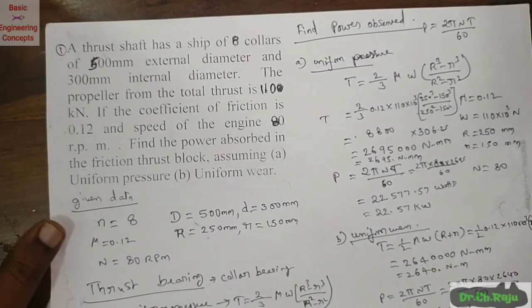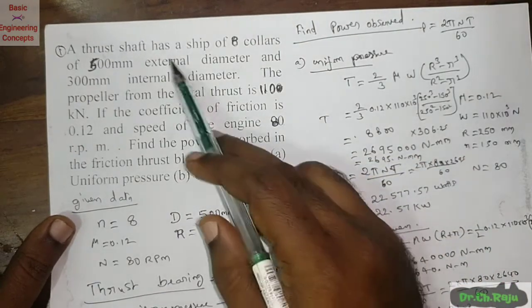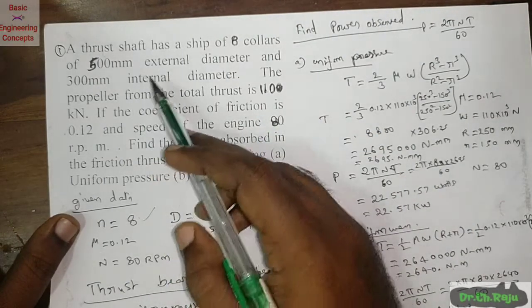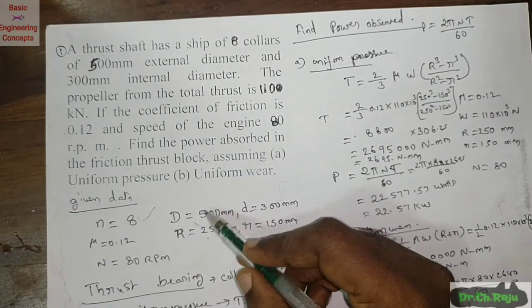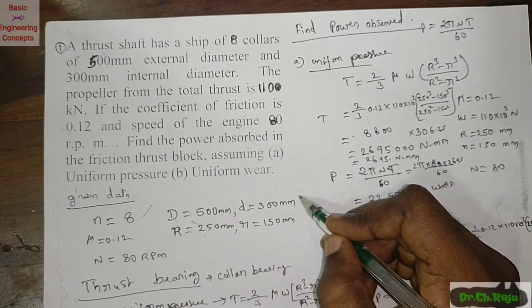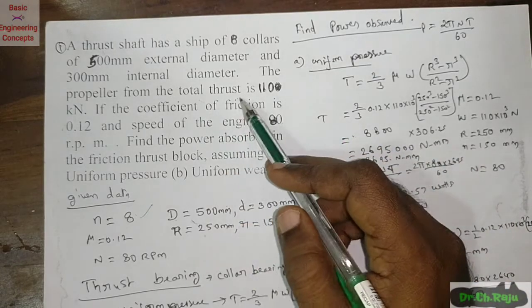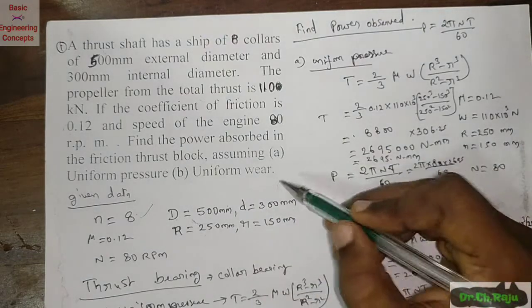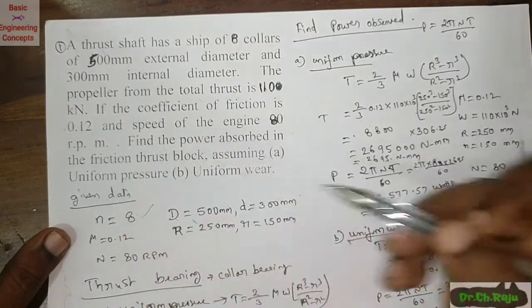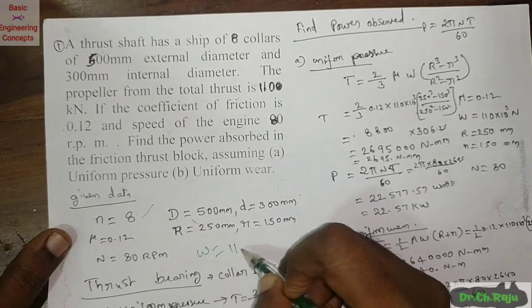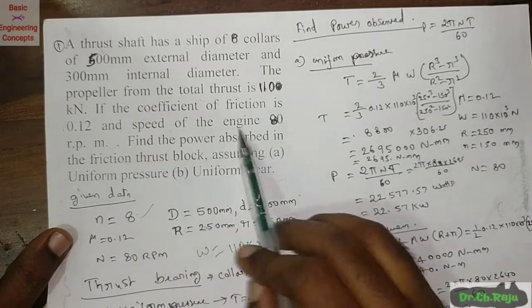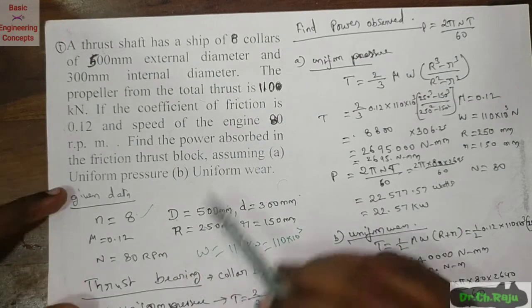This is a thrust bearing problem. The given data: number of collars n = 8; external diameter D = 500 mm; internal diameter d = 300 mm; total thrust W = 110 kN = 110 × 10³ N; coefficient of friction μ = 0.12; speed N = 80 rpm.